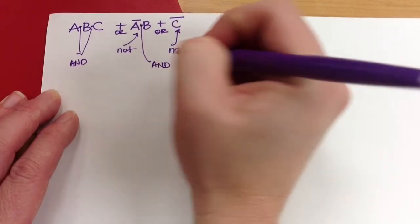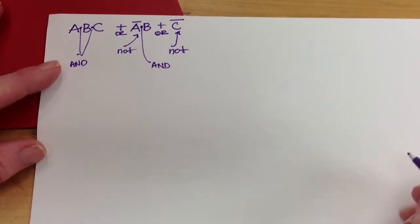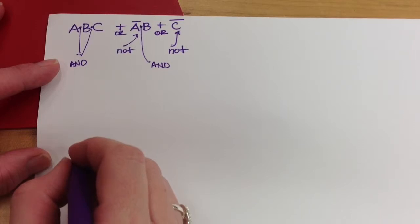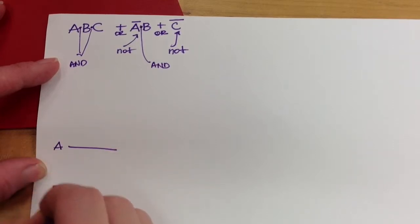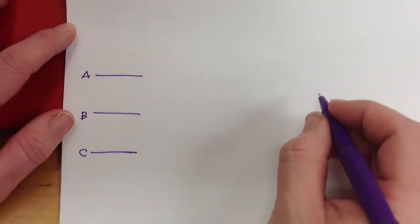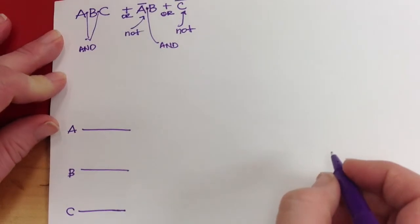So you don't necessarily have to do that before, you can just do it as you go along, but whichever you prefer. So I'm going to draw my circuit here, and I'm just going to draw A, B, C, and then I'm going to start making my logic.